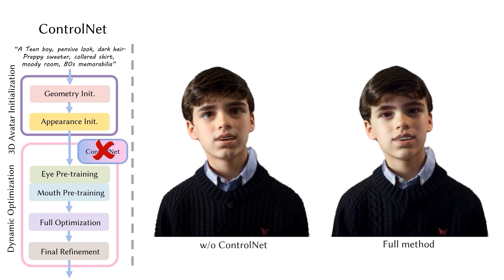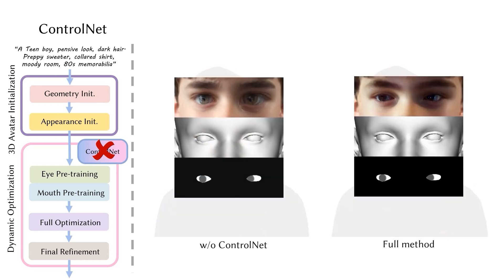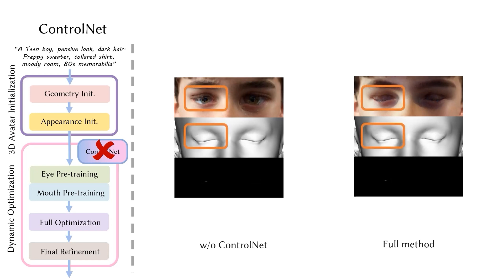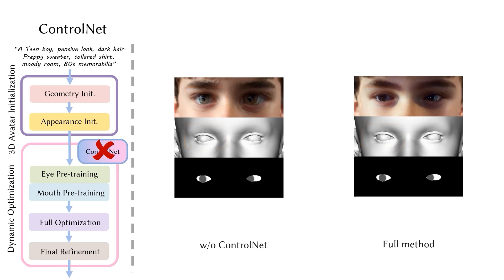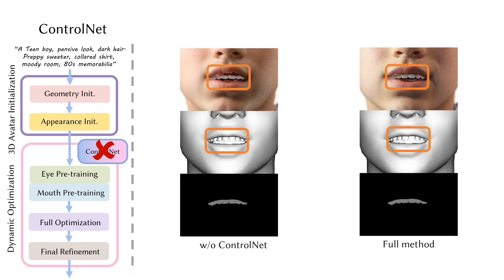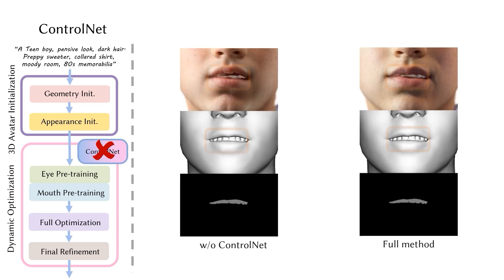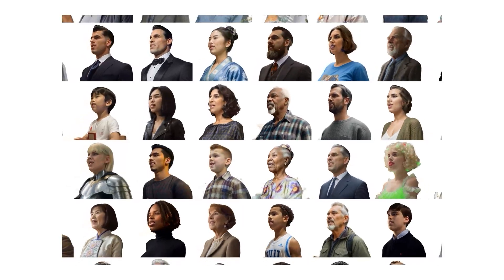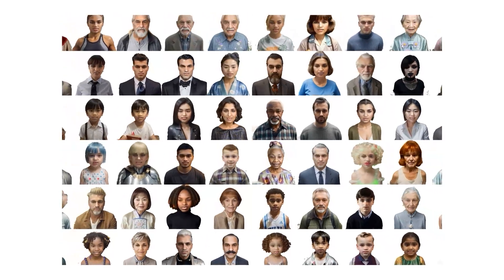The absence of ControlNet's robust guidance leads to noticeable issues: in the eye region, the eyes appear unnaturally large and rigging is inaccurate; in the mouth region, the lips exhibit artifacts. We conclude by showcasing a variety of animatable avatars demonstrating a wide range of appearances, with diversity in ethnicities and ages. Thank you for your attention.